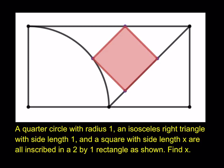So we do have a quarter circle with radius 1, an isosceles right triangle with side length 1, and a square with side length x. They're all inscribed in this rectangle, which is 2 by 1. The base is 2, the height is 1, and we have a quarter circle, an isosceles right triangle which is 45, 45, and 90, and that little square is inscribed. We did have a similar puzzle before, but it was with a circle. So I'm going to also link that video in the description. So what are we going to do?